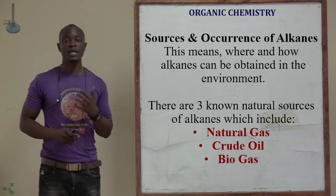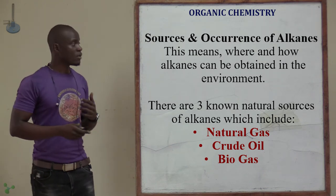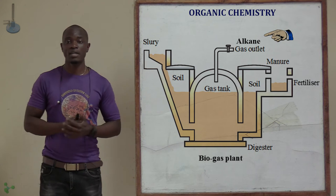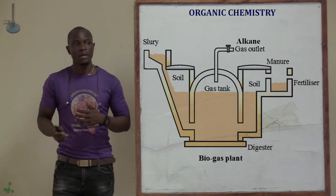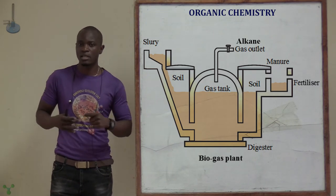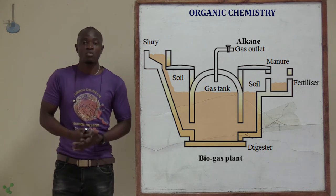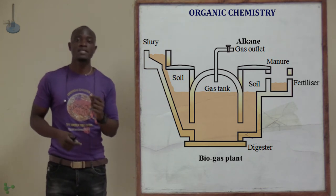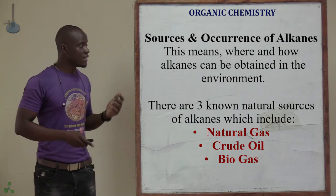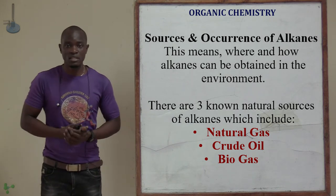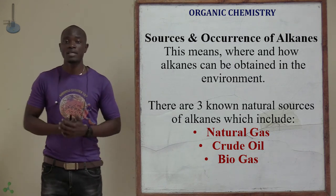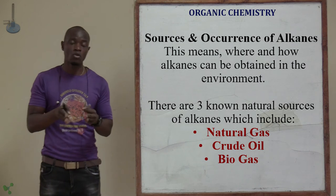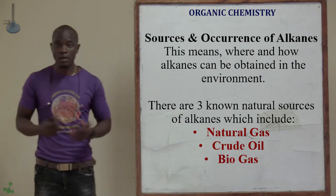Apart from natural gas, we can also obtain alkanes through biogas. Biogas mainly deals with the fermentation of organic matter. If we ferment organic matter, we obtain biogas, which is mainly used in cooking and domestic work such as running machines. In biogas, methane occupies the larger portion — about 60 to 75% — with propane, butane, and ethane making up the rest.